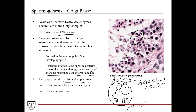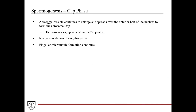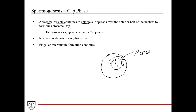Early spermatids are round and smaller than spermatocytes, with heterochromatic nuclei. During the cap phase, the acrosomal vesicle continues to enlarge and spreads over the anterior half of the nucleus, forming a cap-like structure. The acrosomal cap appears flat and is PAS-positive. The nucleus condenses during this phase, and flagellar microtubule formation continues.